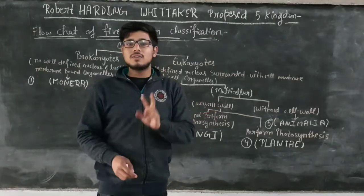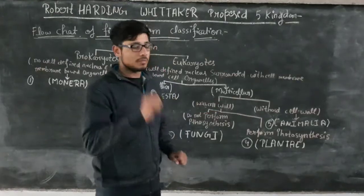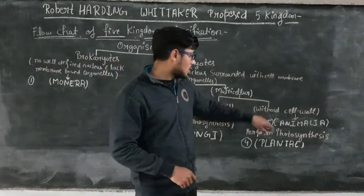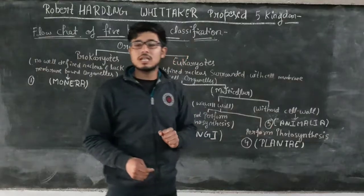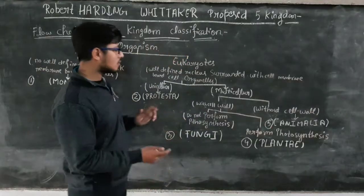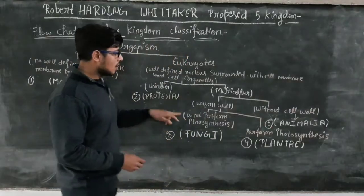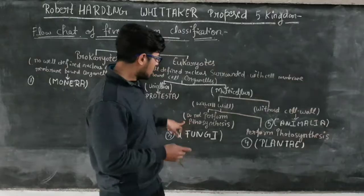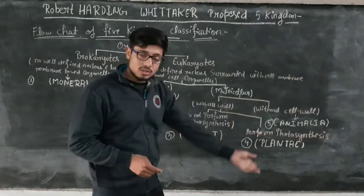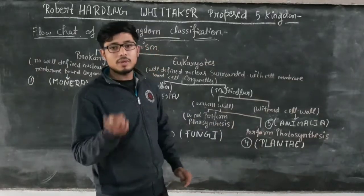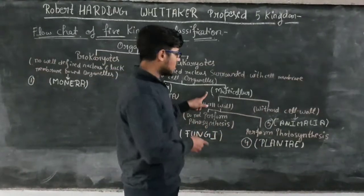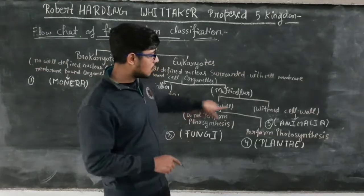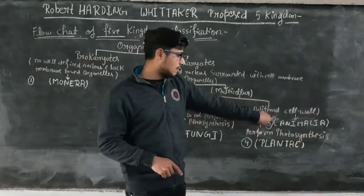The multicellular organisms are further divided into two sub-categories: those with a cell wall and those without a cell wall. Within the cell wall group, we have two groups: those which perform photosynthesis and those which do not perform photosynthesis.